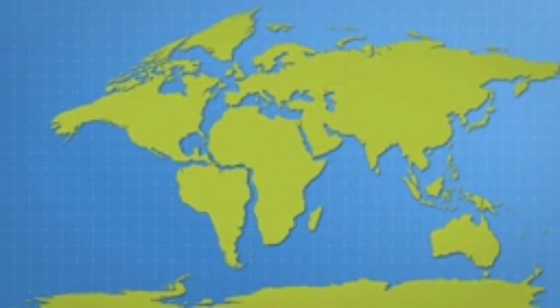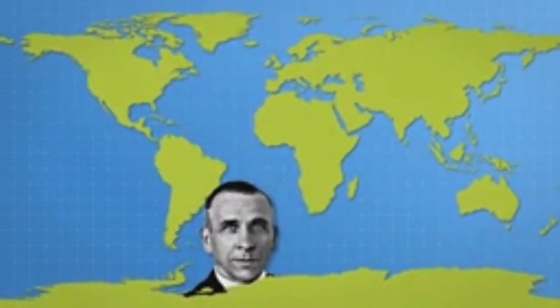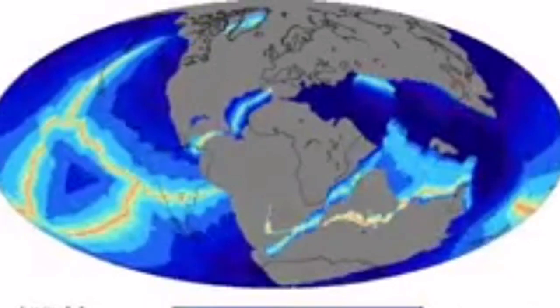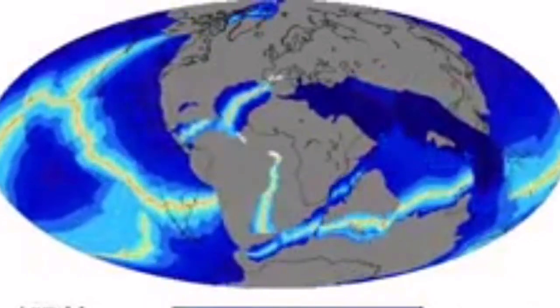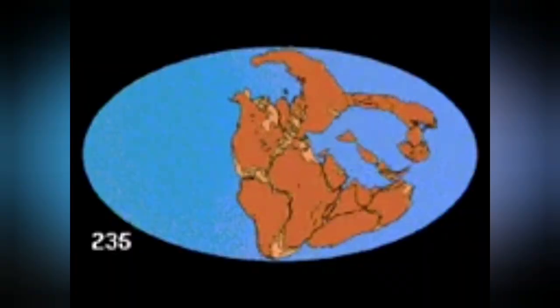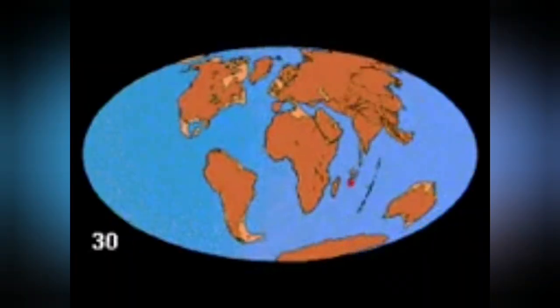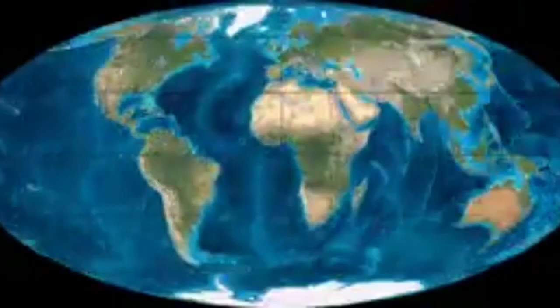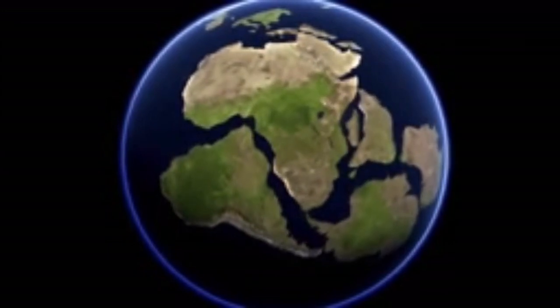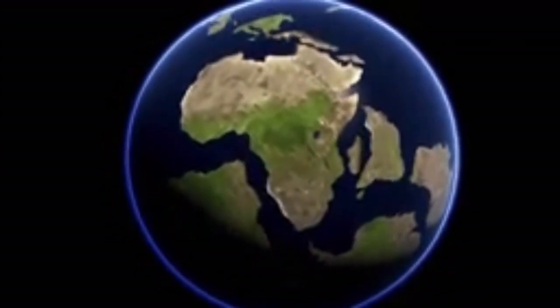First, we discovered that certain coastal areas of the world — for example Africa and South America — match together as if they have been joined together in the past. Alfred Wegener discovered this first. Now we know that the earth's continents are not in the original place they have been; they have moved many times over since the creation of the earth four and a half billion years ago.